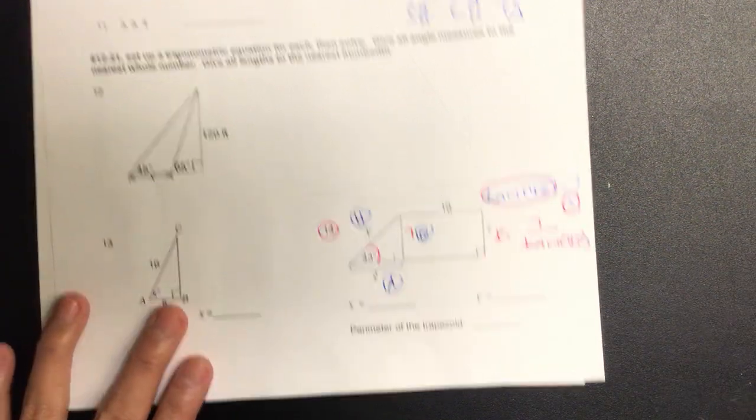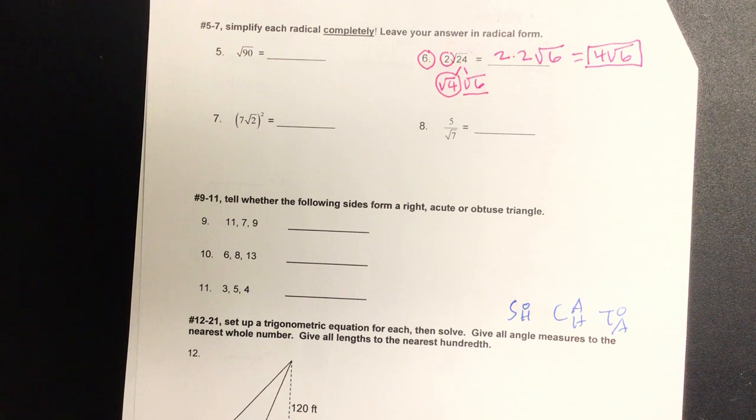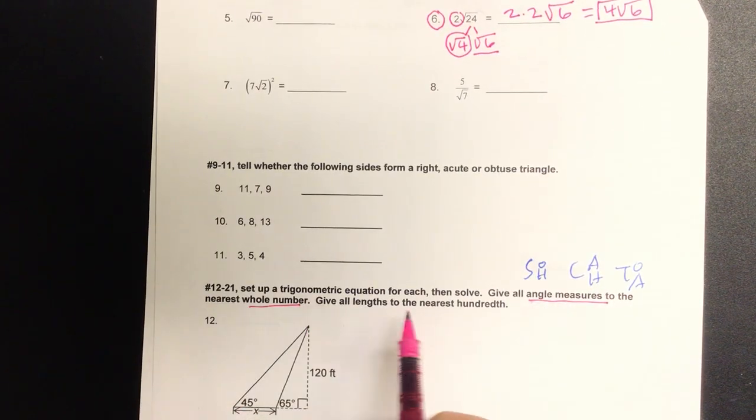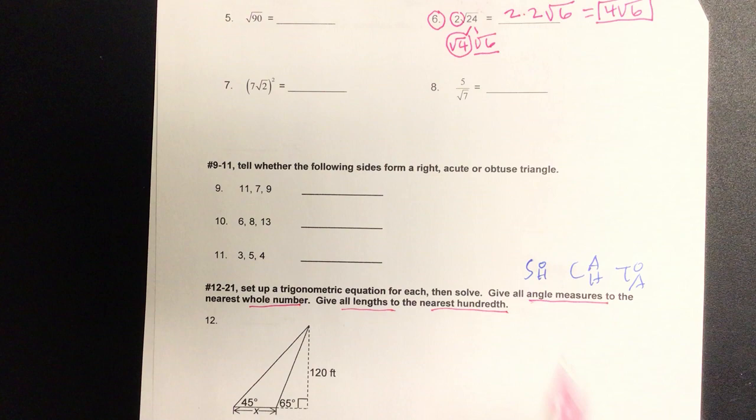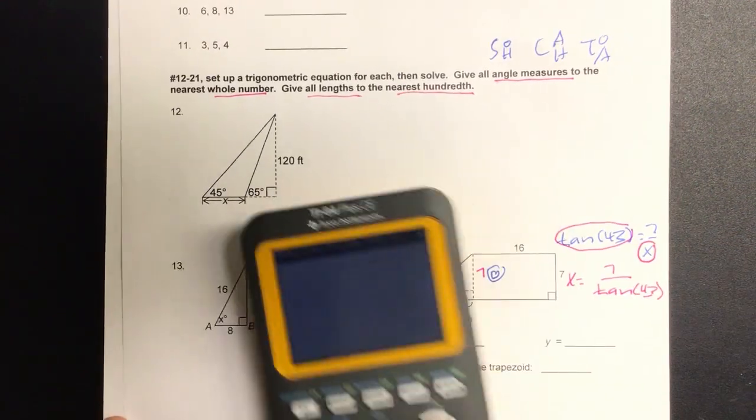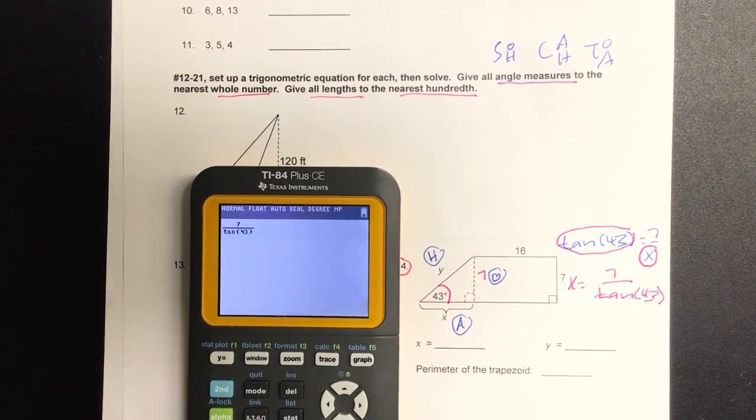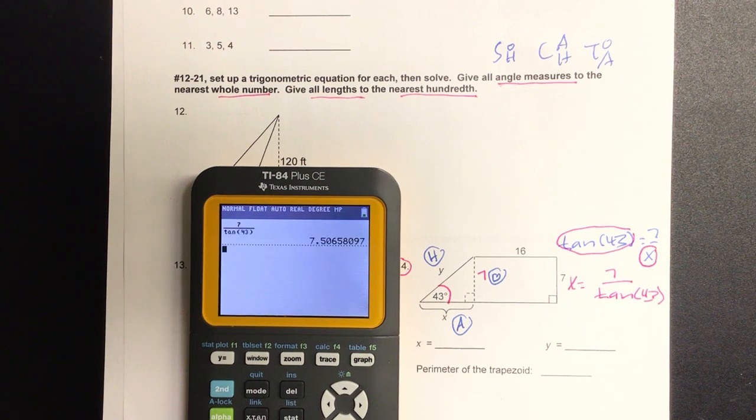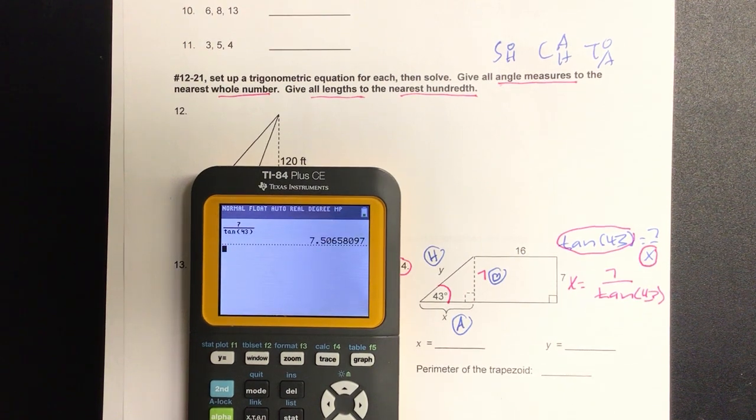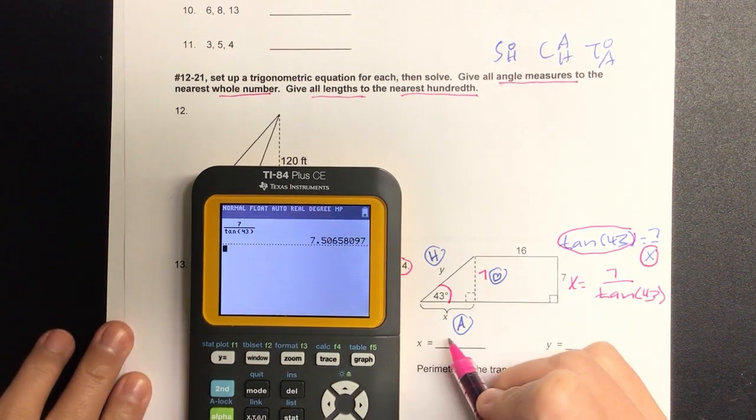And if you notice, the instructions say angle measures to whole number, side lengths to two decimal places. So let's type that in. We have seven over tangent of forty-three. And our number should be pretty close to seven also. Is it pretty close? So we have x equals how many?